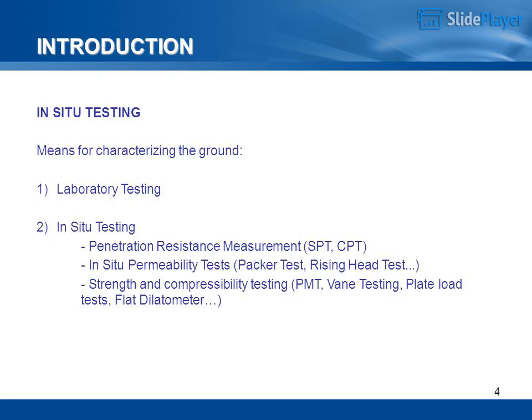Means for characterizing the ground include: Laboratory Testing, and In-Situ Testing. In-situ methods include penetration resistance measurement (SPT, CPT), in-situ permeability tests (Packer Test, Rising Head Test), and strength and compressibility testing (PMT, Vane Testing, Plate Load Tests, Flat Dilatometer).